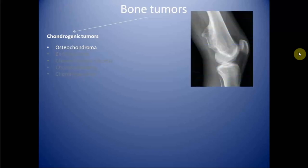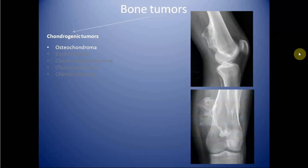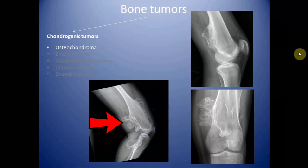Osteochondromas are bony outgrowths arising from the metaphysis of long bones or from flat bones. They can be sessile or pedunculated. They are covered by a cartilaginous cap, and the thickness of the cartilaginous cap can be measured on MRI. If it is more than 20 mm, it suggests development of chondrosarcoma. The growth of osteochondroma stops after physeal fusion, but if growth persists in adulthood it again points towards malignancy.